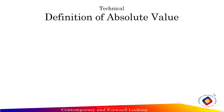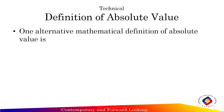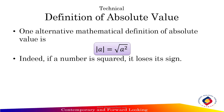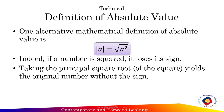Technical definition of absolute value. One alternative mathematical definition is modulus of a equals the square root of a squared. If a number is squared, it loses its sign. Taking the principal square root yields the original number without the sign.